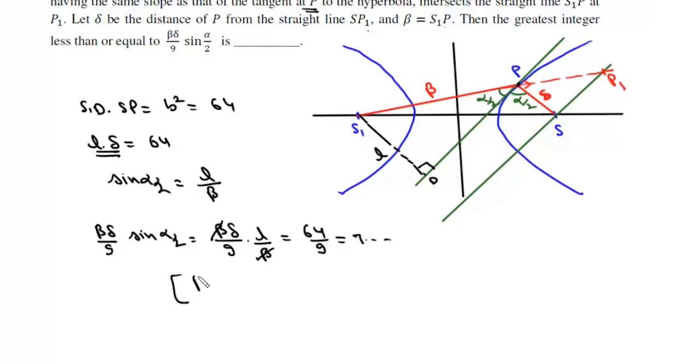So the greatest integer function of beta delta upon 9 sin alpha by 2 will be simply 7, and that is the answer to this question.